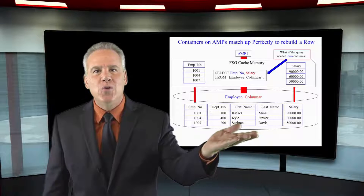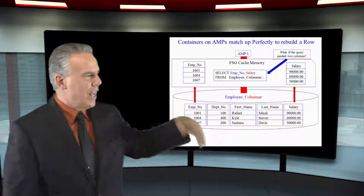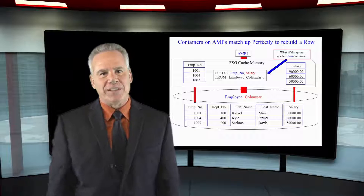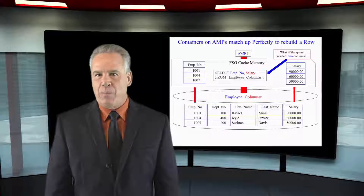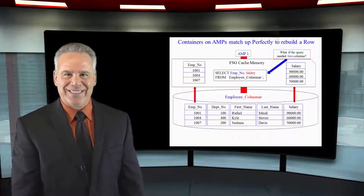What if they ask for two columns in the query? 'I would like to select the employee number and the salary from this table.' The parsing engine is going to be smart enough to know that this is a columnar table, and it tells every AMP: I want you to move your first container and your last container into memory simultaneously. That's how columnar is going to work.